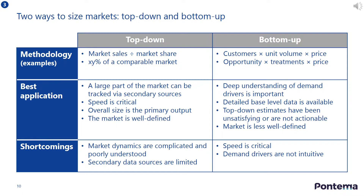By contrast, a bottom-up analysis is calculated by estimating potential sales to determine a total sales figure. A bottom-up analysis evaluates where products can be sold, the sales of comparable products, and the estimate of current sales you can make. To size the overall market, take the underlying population of customers, then multiply by the purchase rate and value of each transaction. While it takes a lot more effort, the result is usually much more accurate.